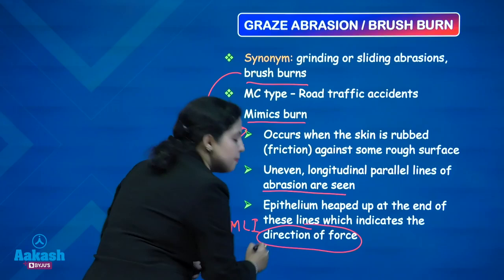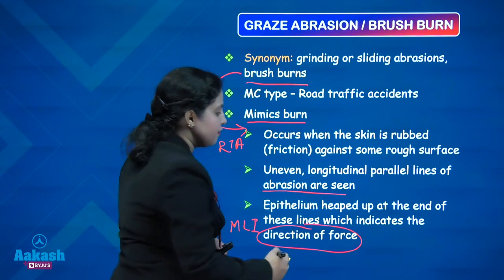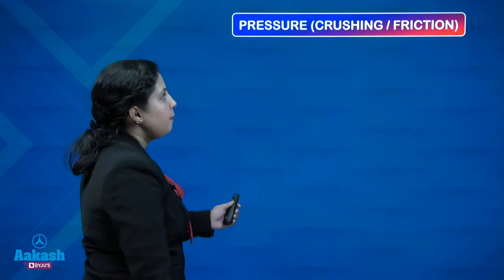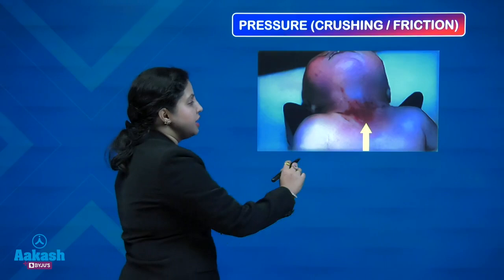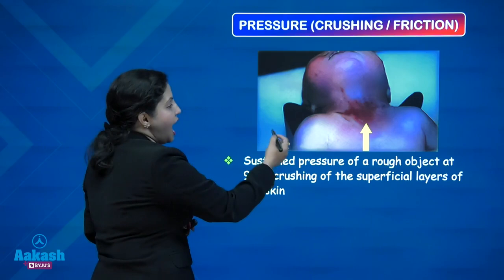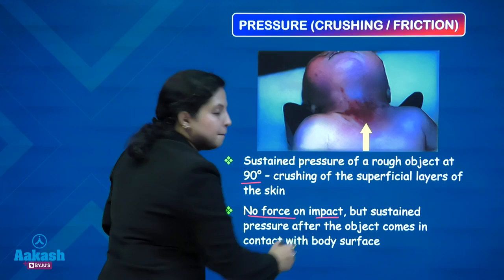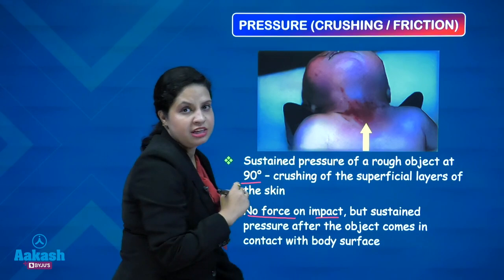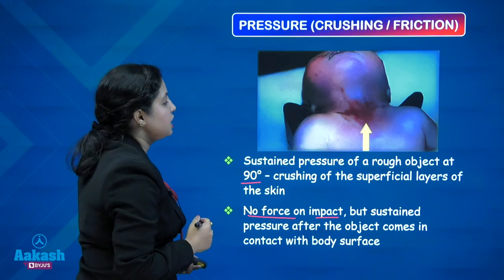This is important for medico-legal purposes: the heaping of tissue at one end of the injury indicates the direction from which the pressure has been applied. Pressure abrasion, also known as crushing abrasion, occurs when sustained pressure of a rough object at 90 degrees causes crushing of the superficial layers of the skin. There is no force on impact; rather, it is because of the sustained pressure after the object comes in contact with the body surface.